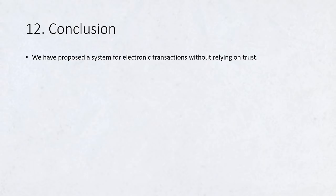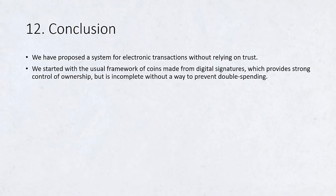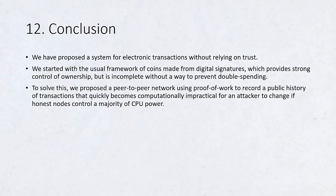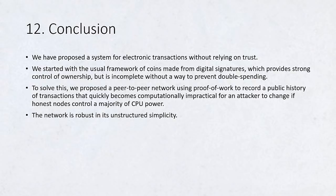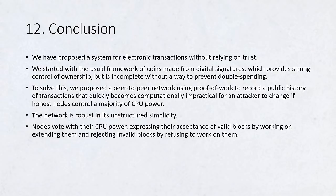Conclusion. We have proposed a system for electronic transactions without relying on trust. We started with the usual framework of coins made from digital signatures, which provides strong control of ownership but is incomplete without a way to prevent double spending. To solve this, we proposed a peer-to-peer network using proof-of-work to record a public history of transactions that quickly becomes computationally impractical for an attacker to change if honest nodes control a majority of CPU power. The network is robust in its unstructured simplicity. Nodes work all at once with little coordination. They do not need to be identified since messages are not routed to any particular place and only need to be delivered on a best-effort basis. Nodes can leave and rejoin the network at will, accepting the proof-of-work chain as proof of what happened while they were gone. They vote with their CPU power, expressing their acceptance of valid blocks by working on extending them and rejecting invalid blocks by refusing to work on them. Any needed rules and incentives can be enforced with this consensus mechanism.